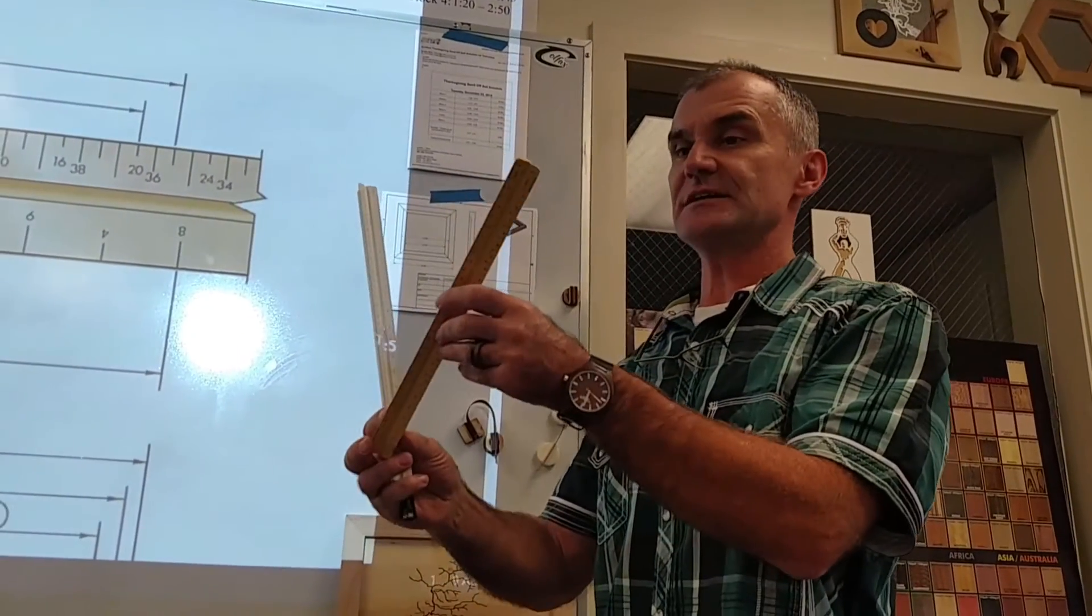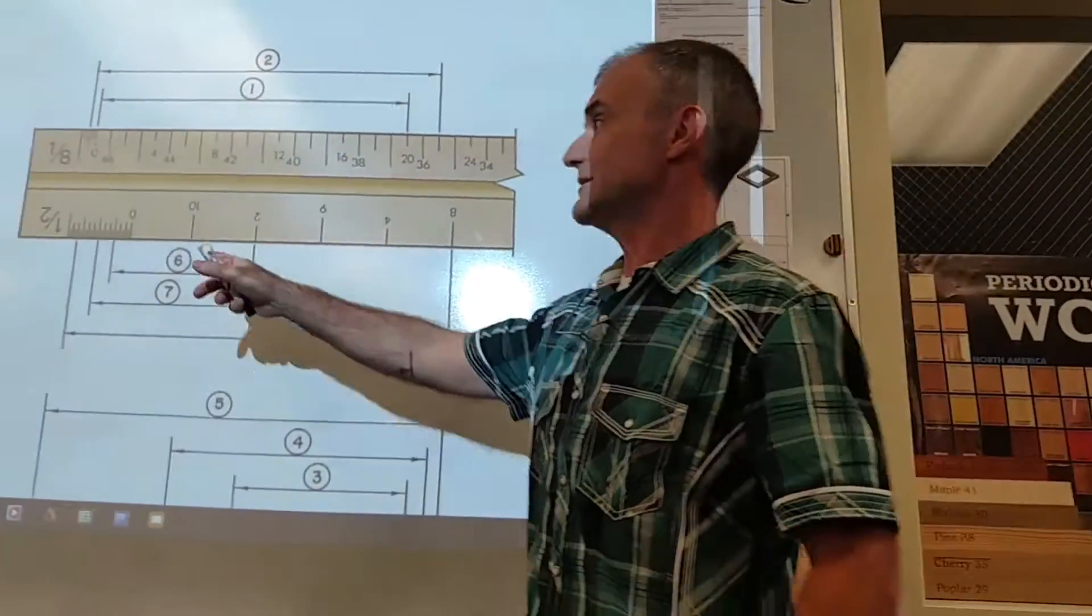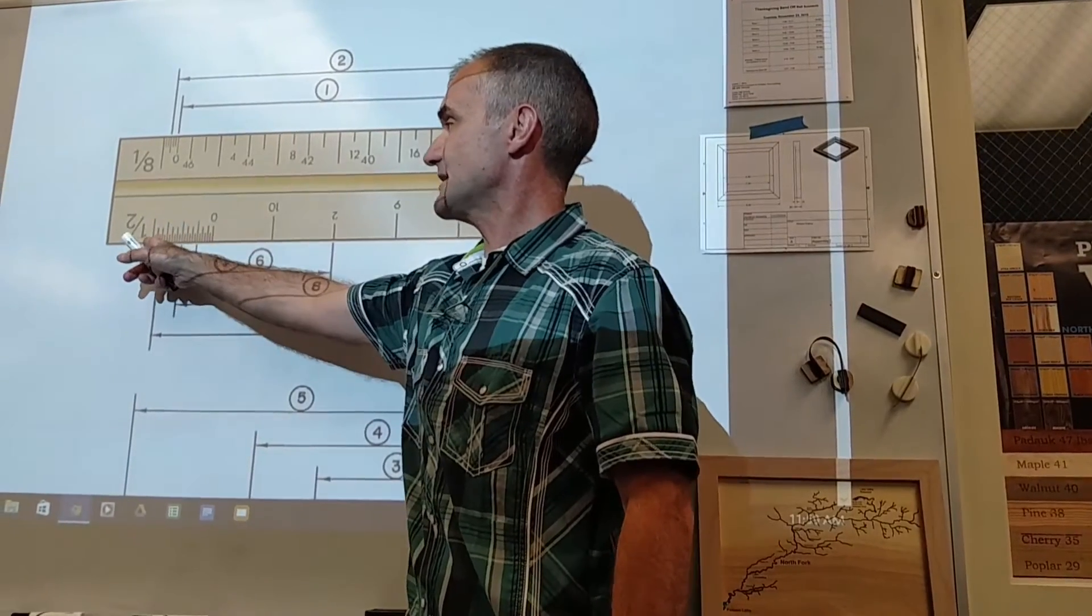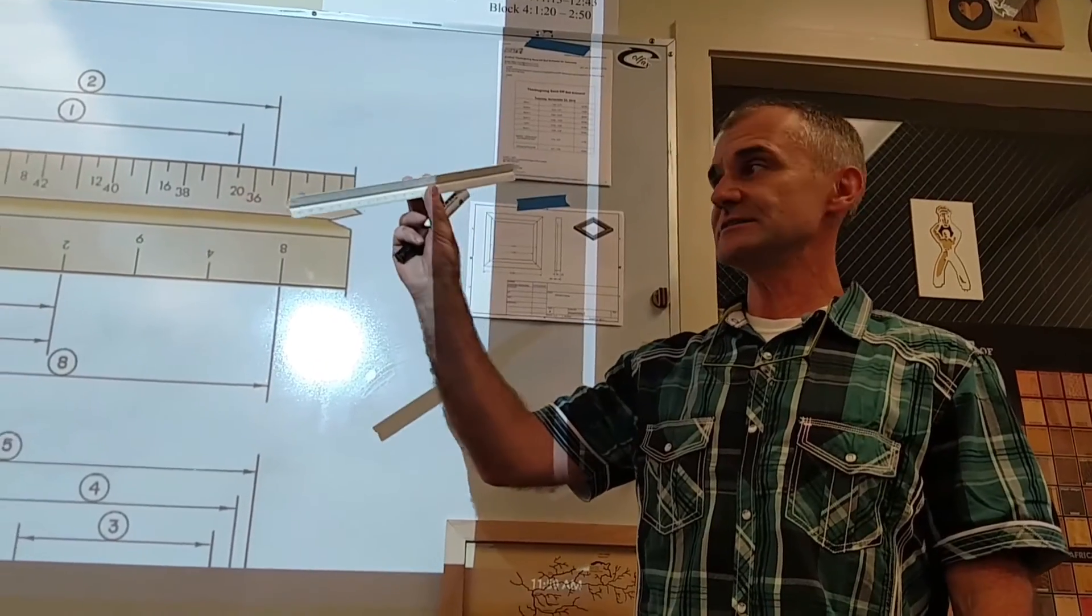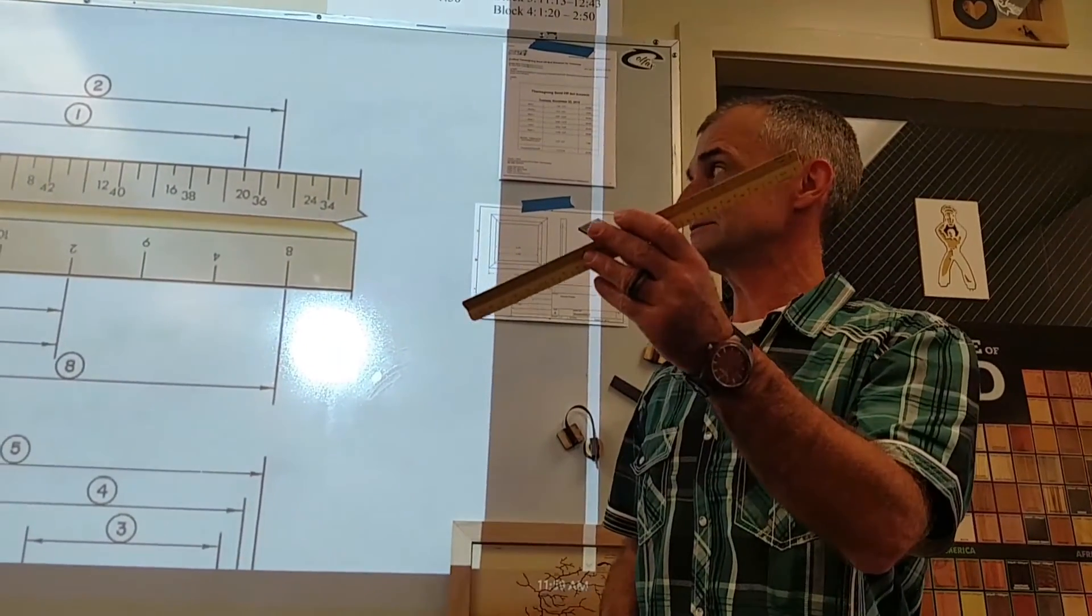So an architectural scale is all feet and inches. And a good way to tell is by what's to the side of the zero. An engineer scale is all decimal. So this is an engineer scale, this is an architectural scale.